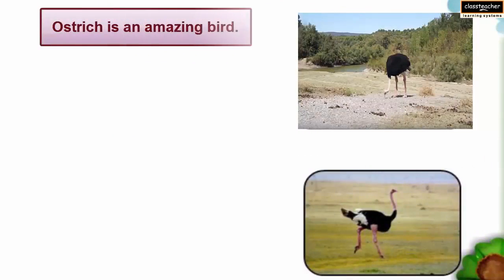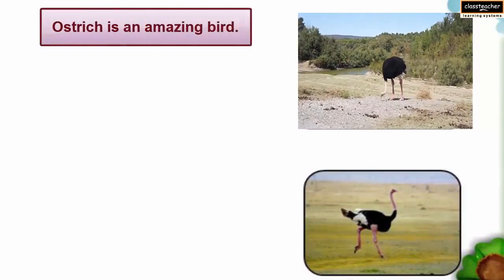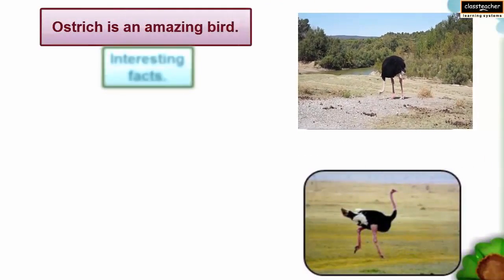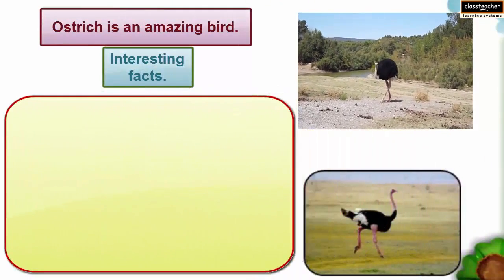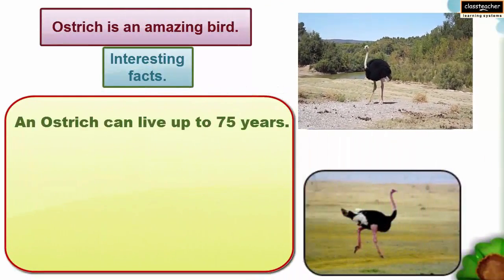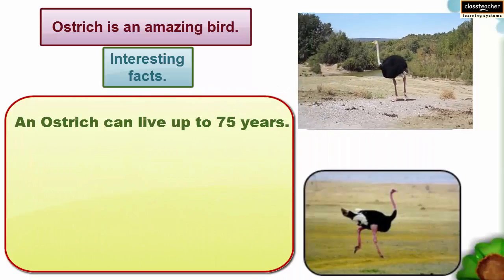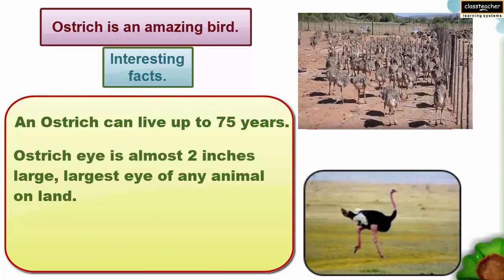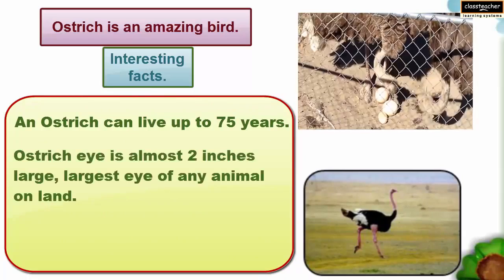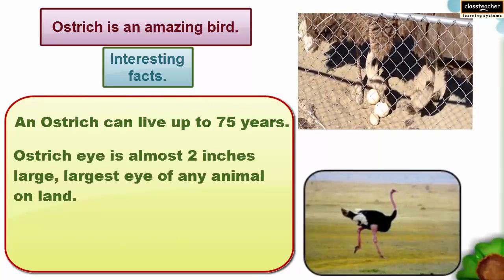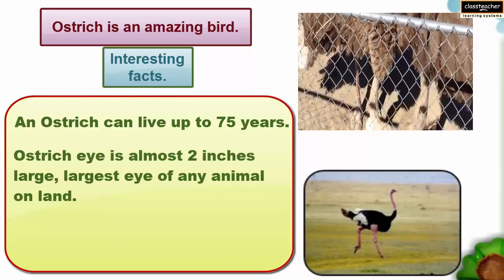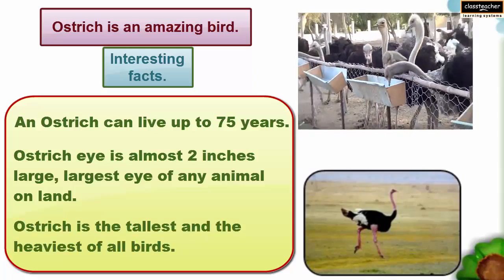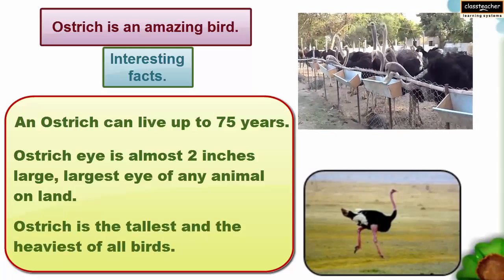Ostrich is an amazing bird. Let us have a look at some interesting facts about ostrich. An ostrich can live up to 75 years. The ostrich eye is almost 2 inches large, making it the largest eye of any animal on land. The ostrich is the tallest and the heaviest of all birds.